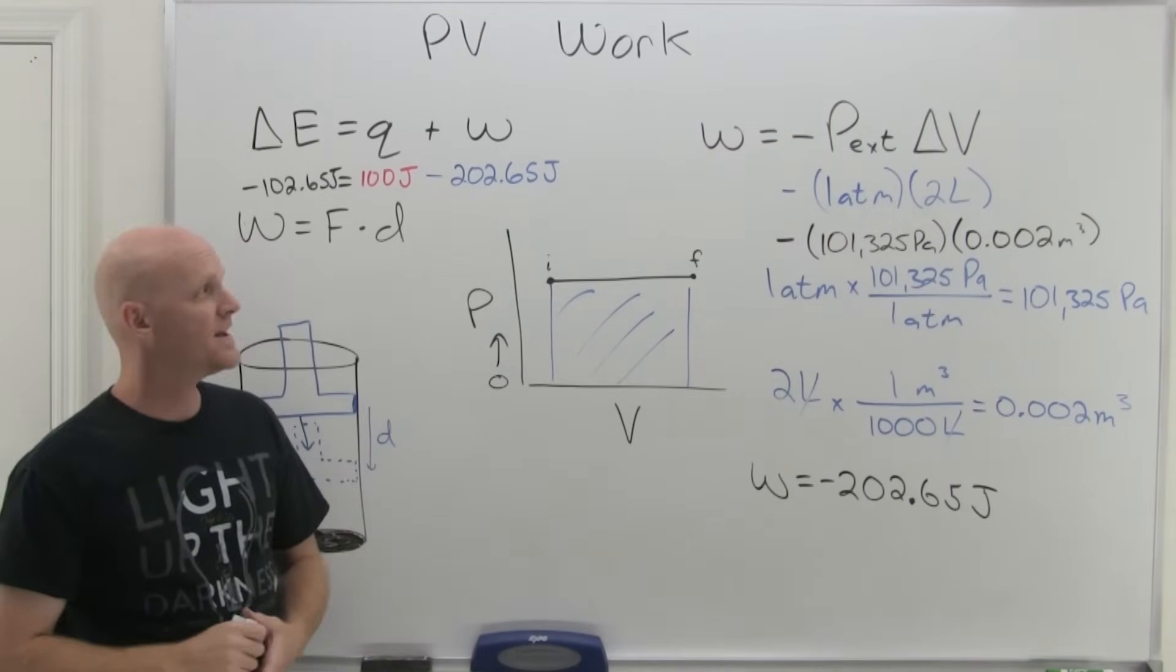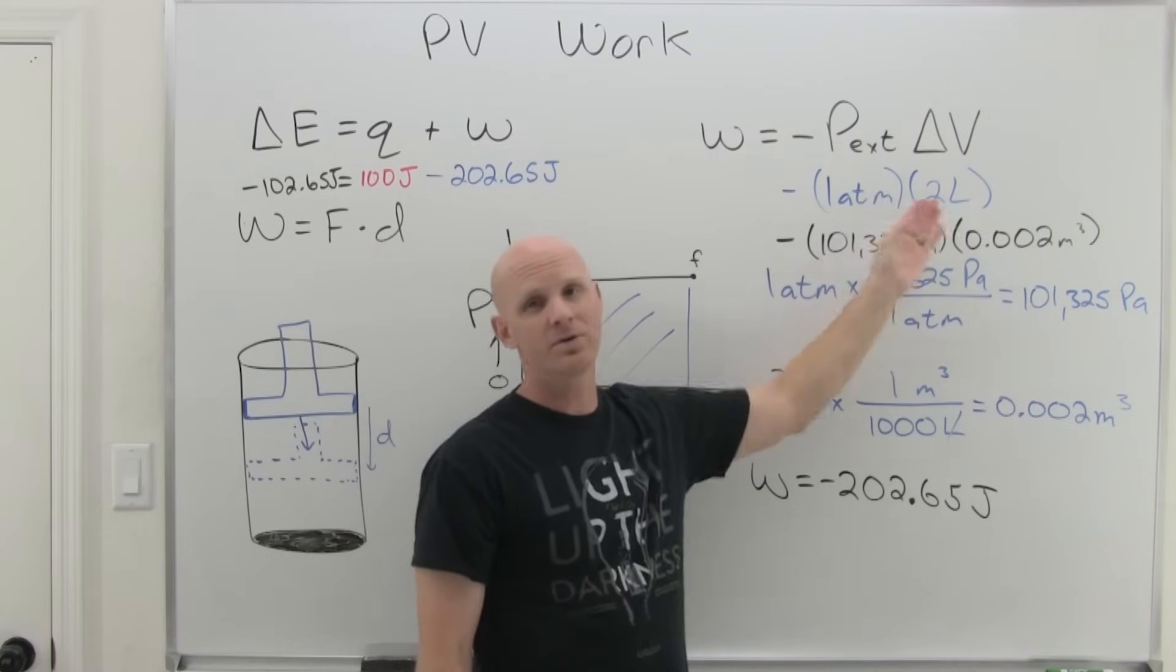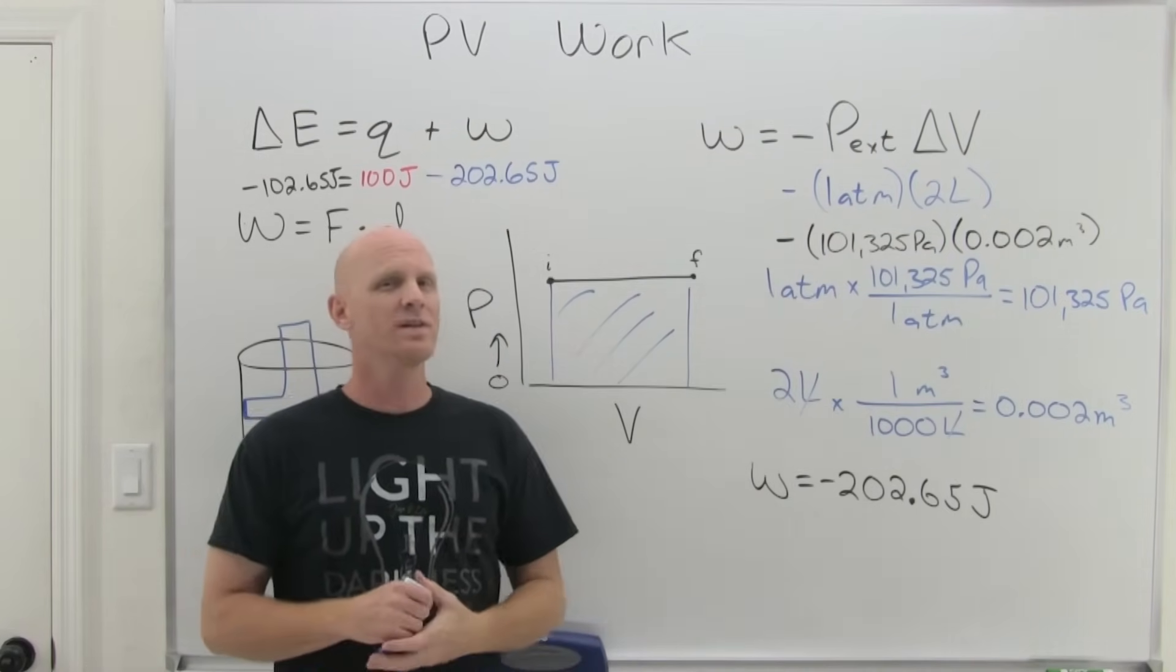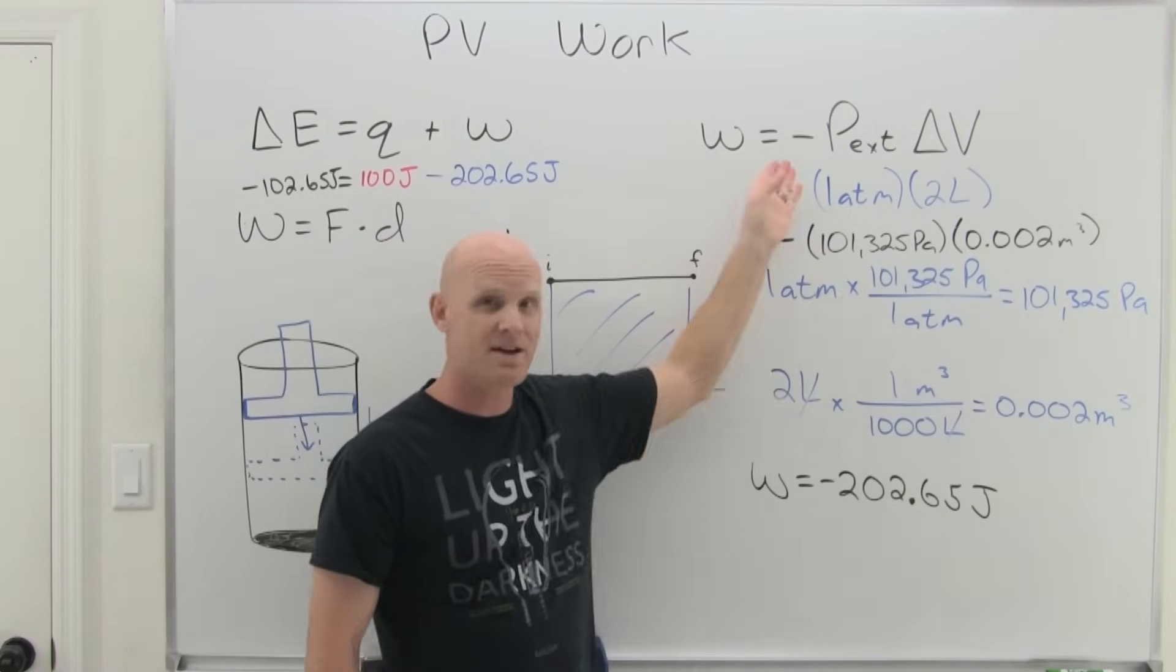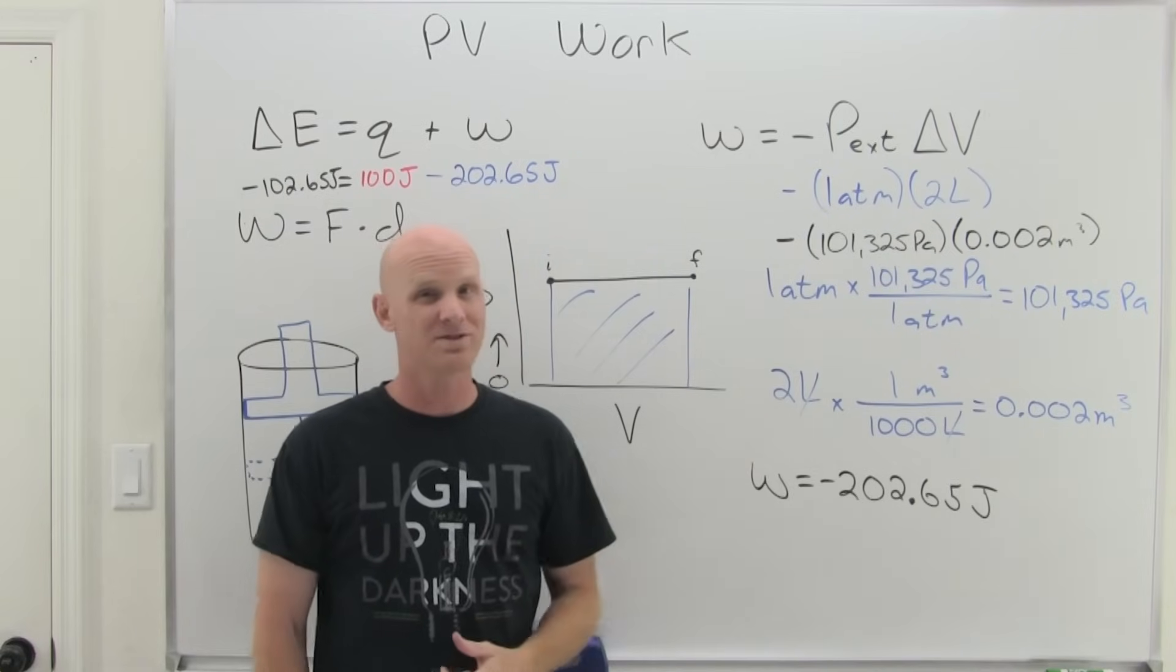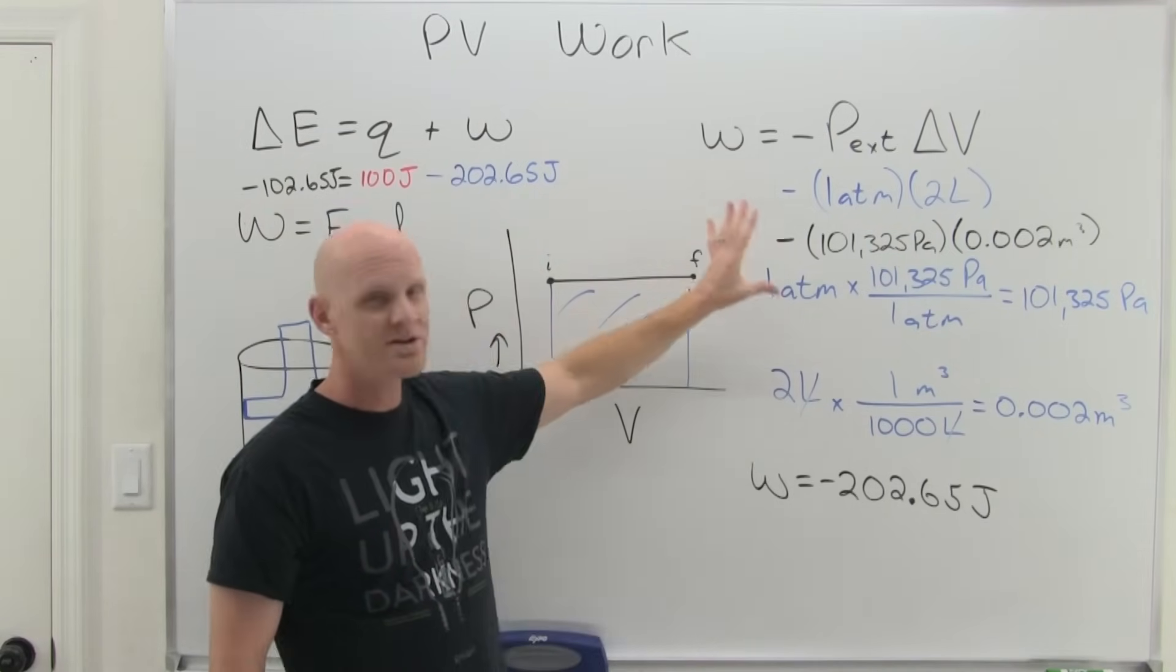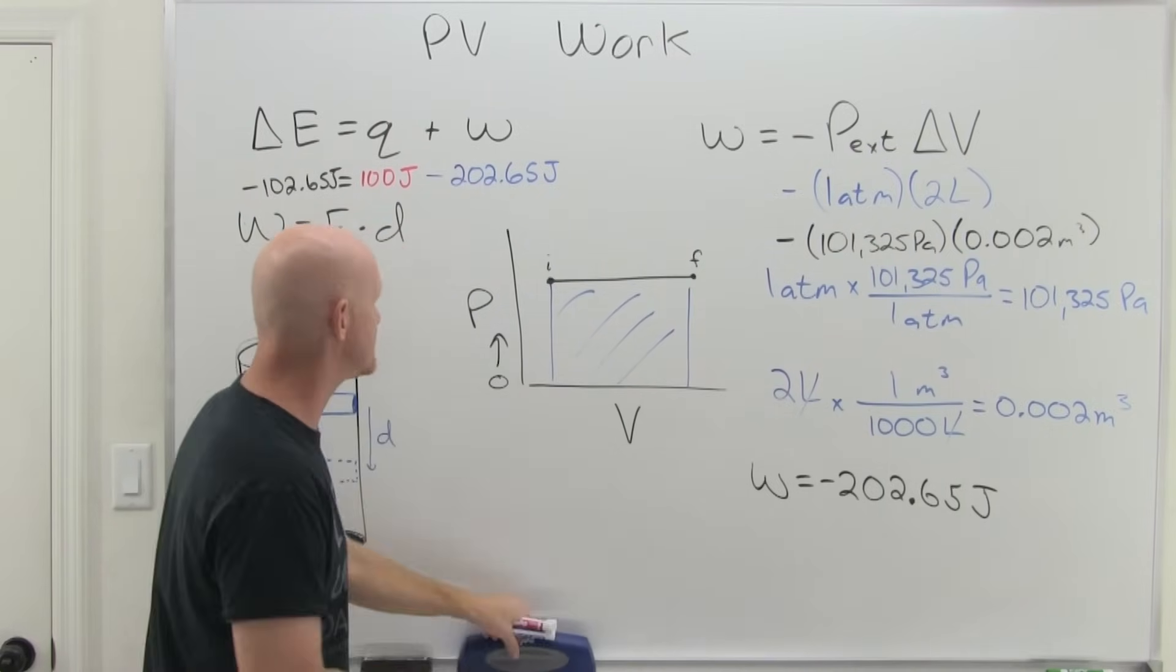And we'd find out that 100 minus 202.65 is going to be negative 102.65 for the change in internal energy. And I'm not worried about sig figs here at all. So this is one way of getting your work in joules when the pressure has been provided in atmospheres and the volume change in liters. But it's not the only way. And this one's a little bit of a pain in the butt because students don't often have to actually convert between atmospheres and Pascals or between meters cubed and liters. And so a lot of students really struggle with this conversion.